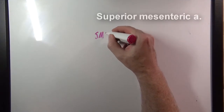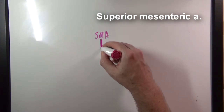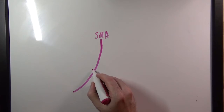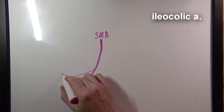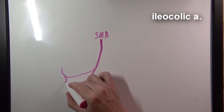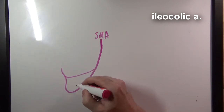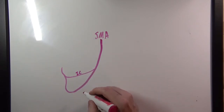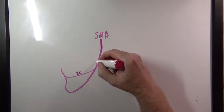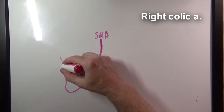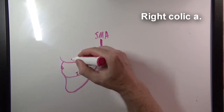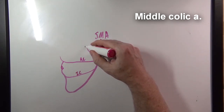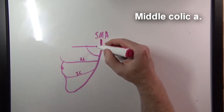The superior mesenteric artery is up next. It sweeps downward, and from it we have the ileocolic artery branching off to supply the ileum and the cecum. We have the right colic artery supplying the ascending colon, which anastomoses with the ileocolic. Then we have the middle colic artery supplying blood to the transverse colon.